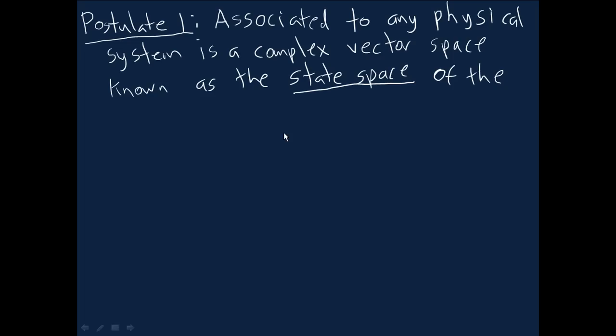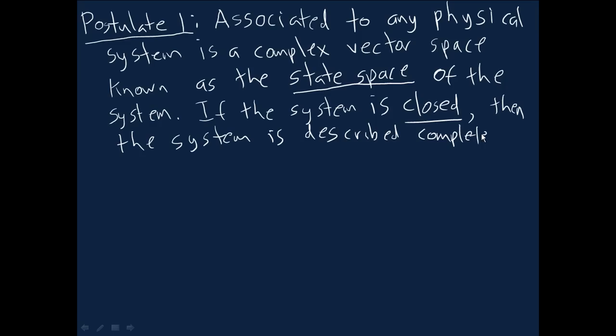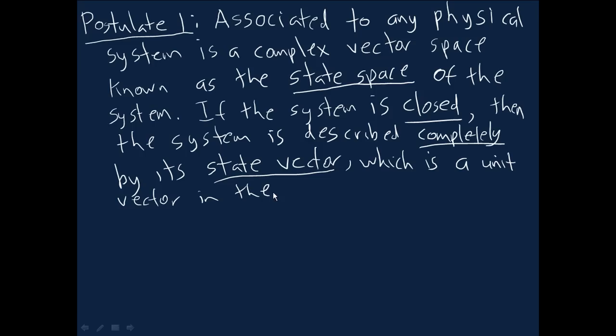And if the system is closed, so it's not interacting with the rest of the world, in fact we can describe the system completely by its state vector. As you can perhaps guess, this is the most complete possible description of the quantum system is described completely by its state vector. And as we've seen before, it's a unit vector, a vector of length one in the state space.